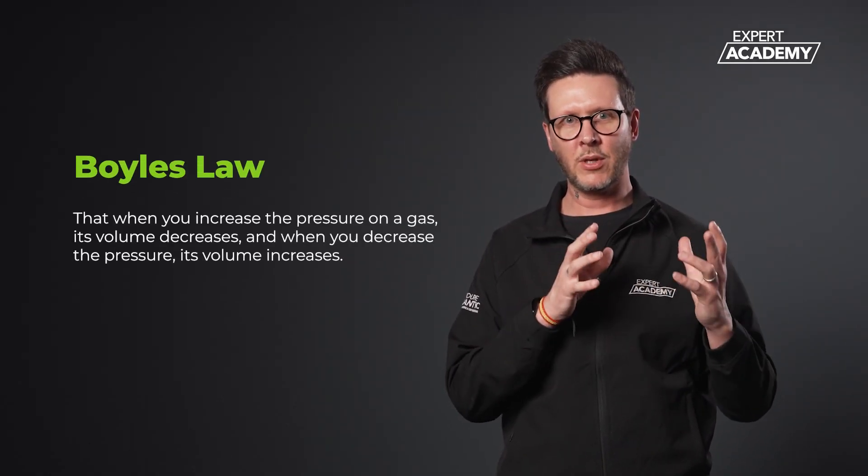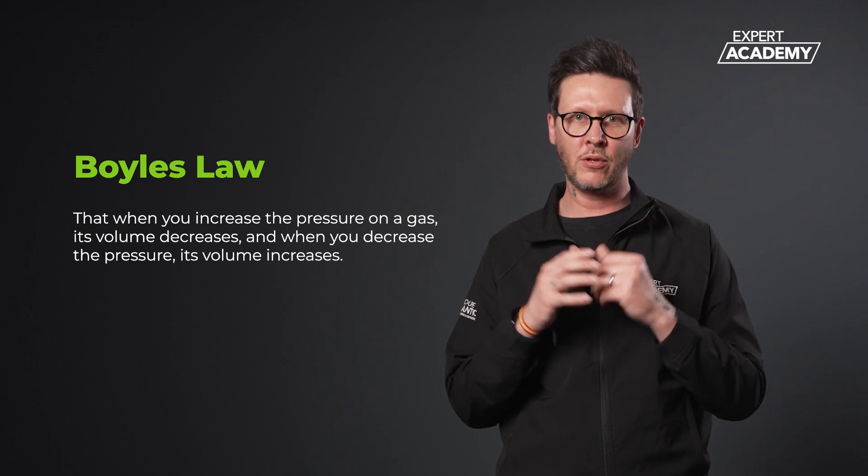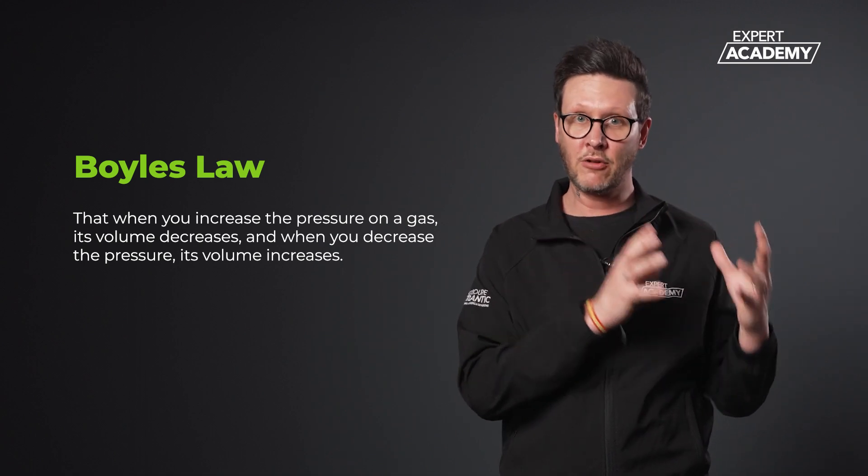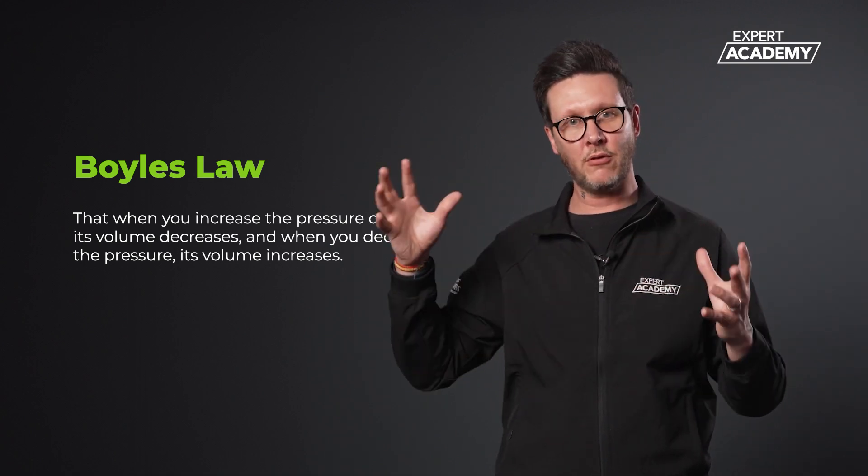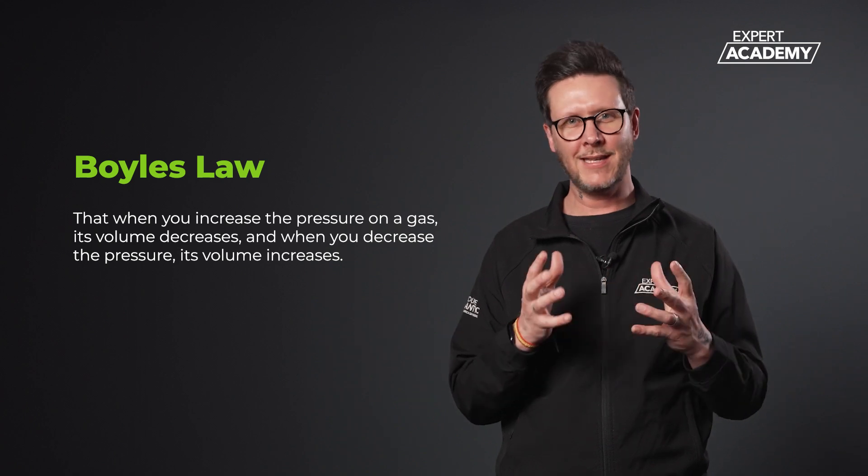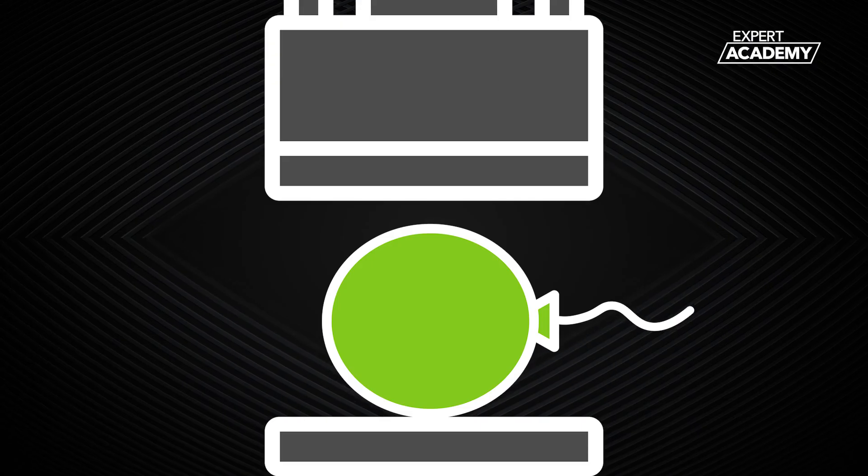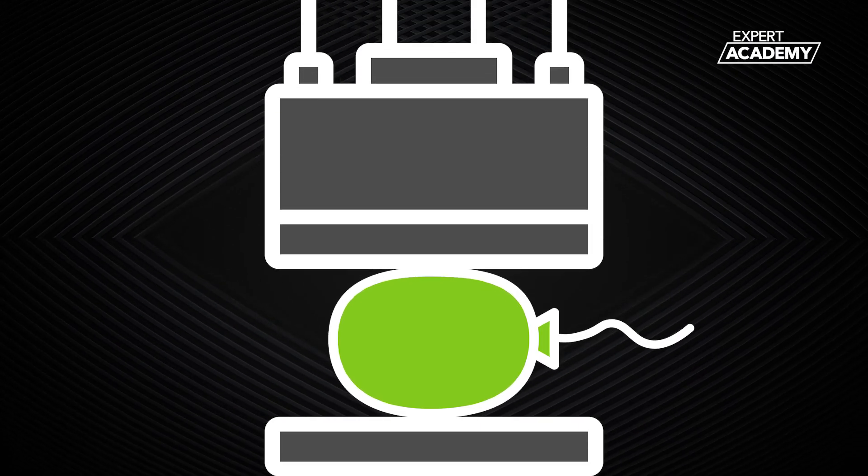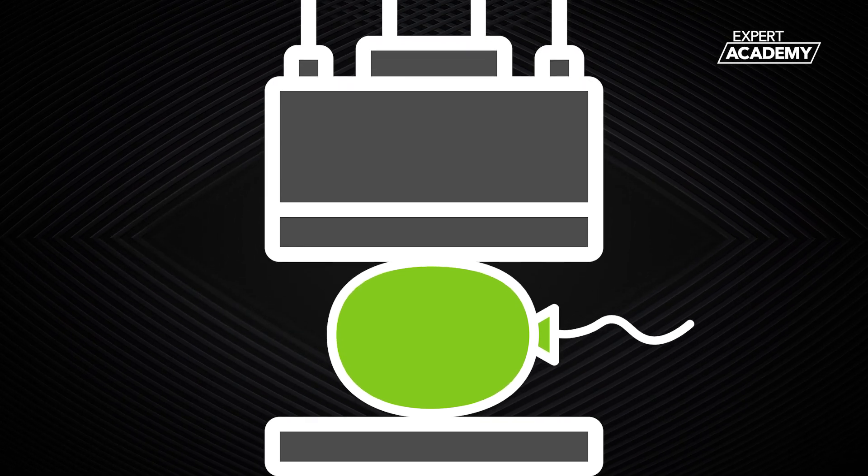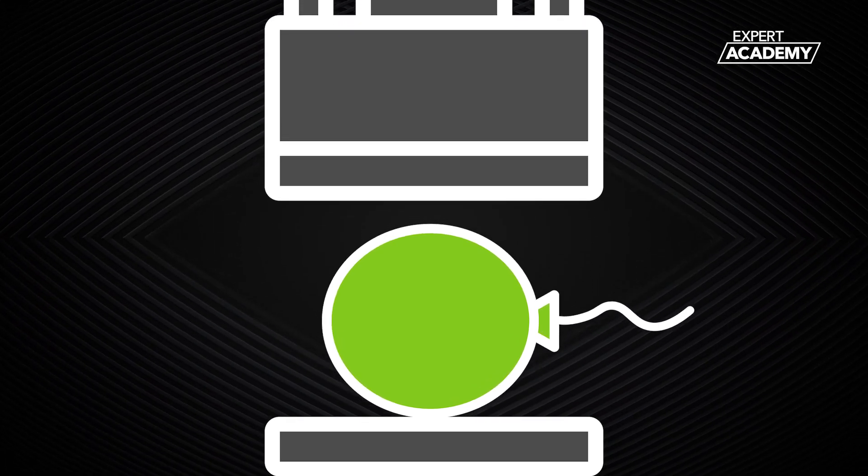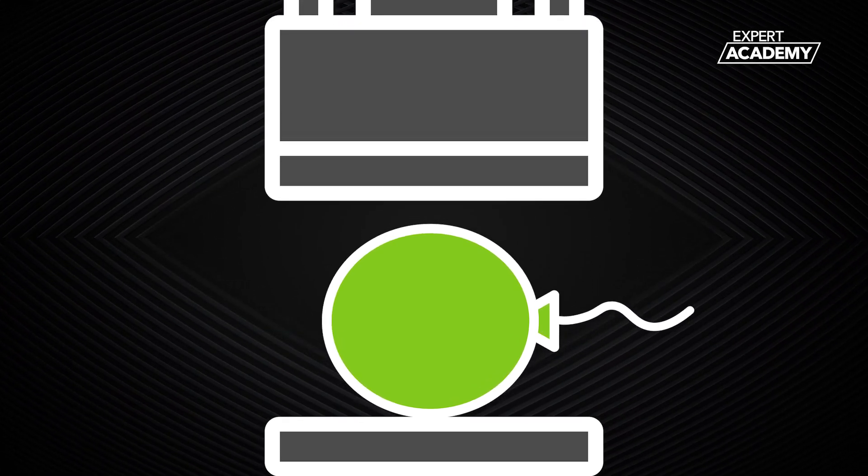Two gas laws which help explain the vapor compression cycle are Boyle's law and Charles law. Boyle's law states that when you increase the pressure on a gas its volume decreases, and when you decrease the pressure its volume increases. To make that easier, think of a balloon. If you squeeze the balloon its size will shrink, but if you release the pressure it will expand again. This illustrates how pressure affects the volume of a gas.